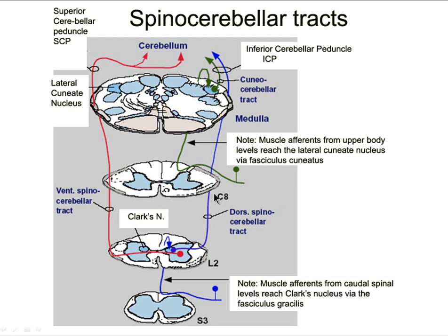As we noted, Clark's nucleus — the origin of the dorsal spinal cerebellar tract — only exists from C8 to L2. So how do we get unconscious proprioceptive information above C8? If something comes in from the upper extremity — information from muscle spindles and Golgi tendon organs — there's no Clark's nucleus, so it goes up and seeks out another nucleus called the lateral or external cuneate nucleus.